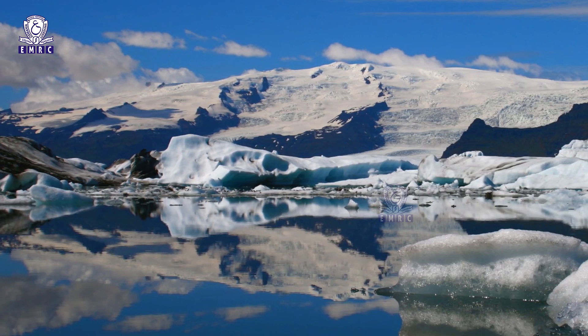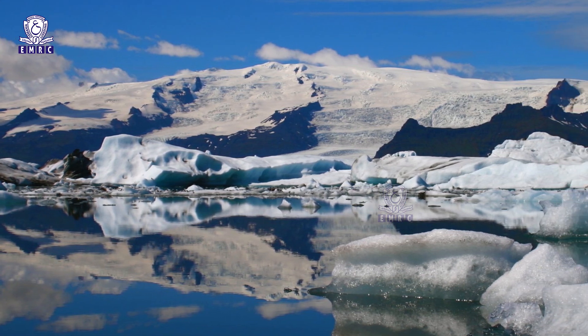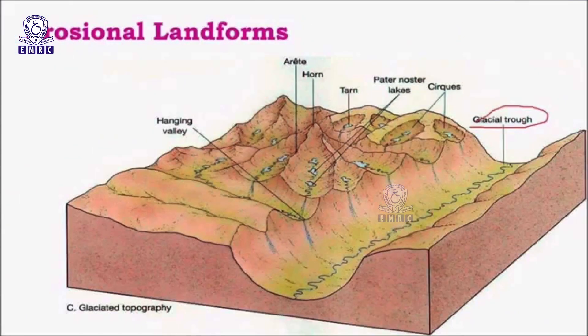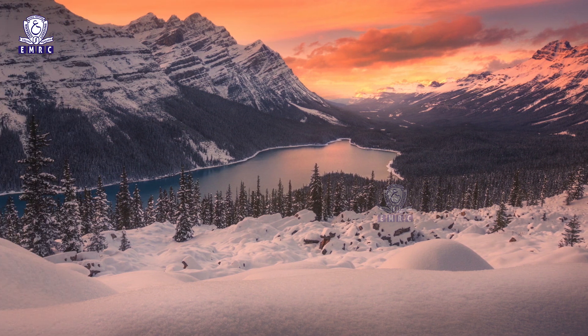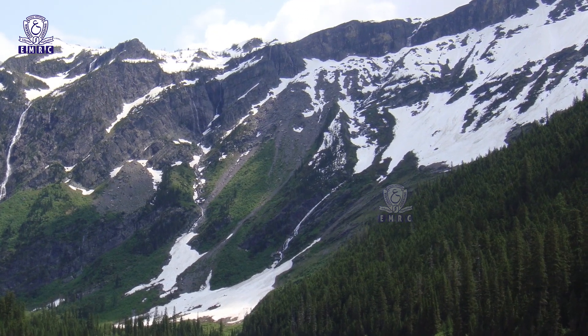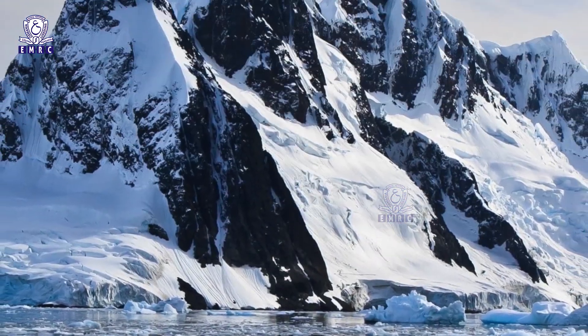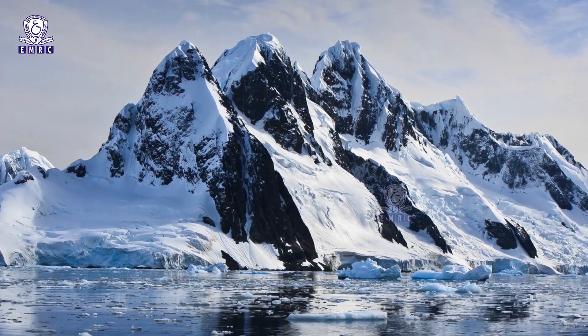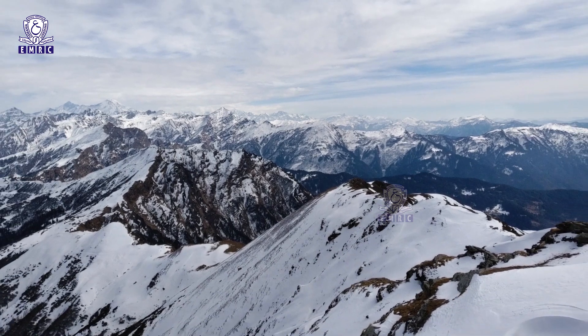In the earlier session on glacial processes, we have seen how a glacier moves, the geomorphic processes operated by the glacier, types of glacier, and the landscape produced by glacial deposition. Although depositional features associated with the work of glaciers are strikingly displayed, it is the erosional landforms that add distinctiveness to the glacial landscape. The scenic beauty of snow-covered mountains is spectacular.